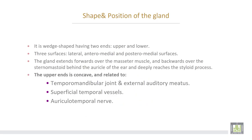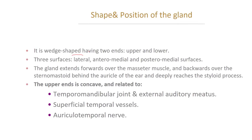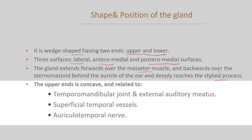The shape and position of the gland is a wedge shape having two ends — upper and lower — and three surfaces: lateral surface, anteromedial, and posteromedial surfaces. The gland extends forwards over the masseter muscle and backwards over the sternomastoid muscle behind the auricle of the ear, and deeply it reaches the styloid process of the skull. The upper end is concave and related to the temporomandibular joint, external auditory meatus, superficial temporal vessels, and auriculotemporal nerve.